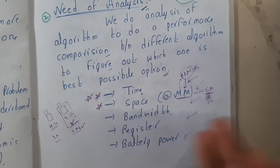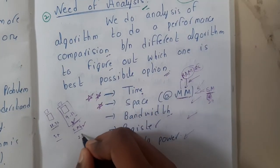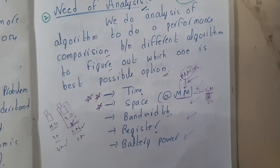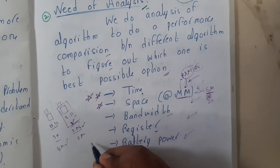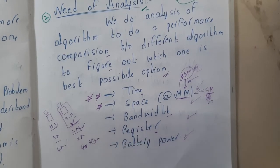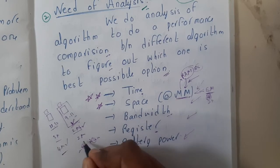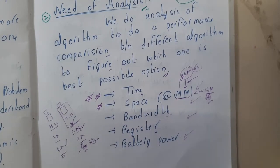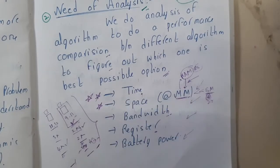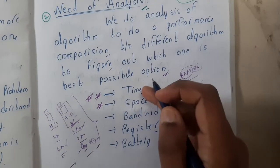Similarly, bandwidth. If your application is using the internet or transferring files, the rate at which it transfers data matters. Assume this can do up to 2MB and this can do up to 4MB - at that point, 4MB is best. Similarly, registers: when you write a code with variables like 'int i = 10', if stored as register type it stores the value in a register, so you compare how many registers each code uses. And battery power: how much battery each code consumes while running.